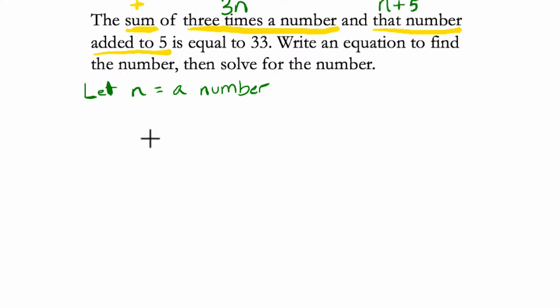We're finding the sum of these two things. Let's write this down: 3n plus (n plus 5). I put the n plus 5 in parentheses to remind myself that's our second term given in the written form of this question.